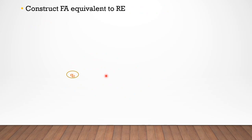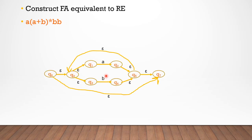Now we combine this to construct the finite automata. This is a into (a plus b) star into b — that is our question. Then this is (a plus b) star, and this is the starting state.